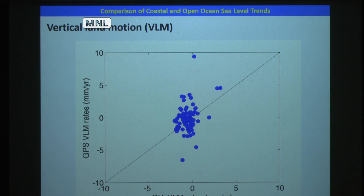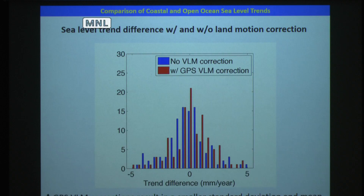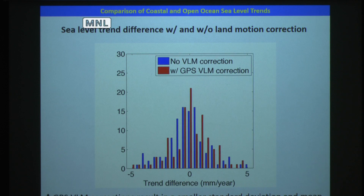The blue bars represent the case without vertical land motion correction; the red bars represent the case with GPS vertical land motion correction. Applying GPS vertical land motion correction results in a smaller standard deviation and smaller mean value, consistent with our expectation. With the distribution of these trend differences, the significance of mean trend difference is examined by Monte Carlo simulations.